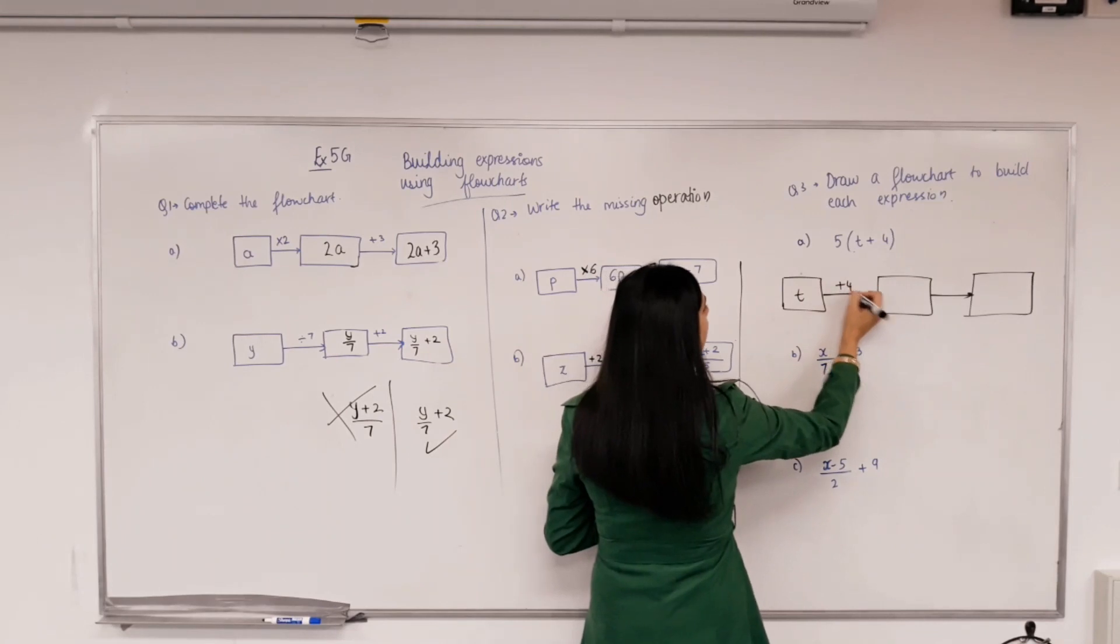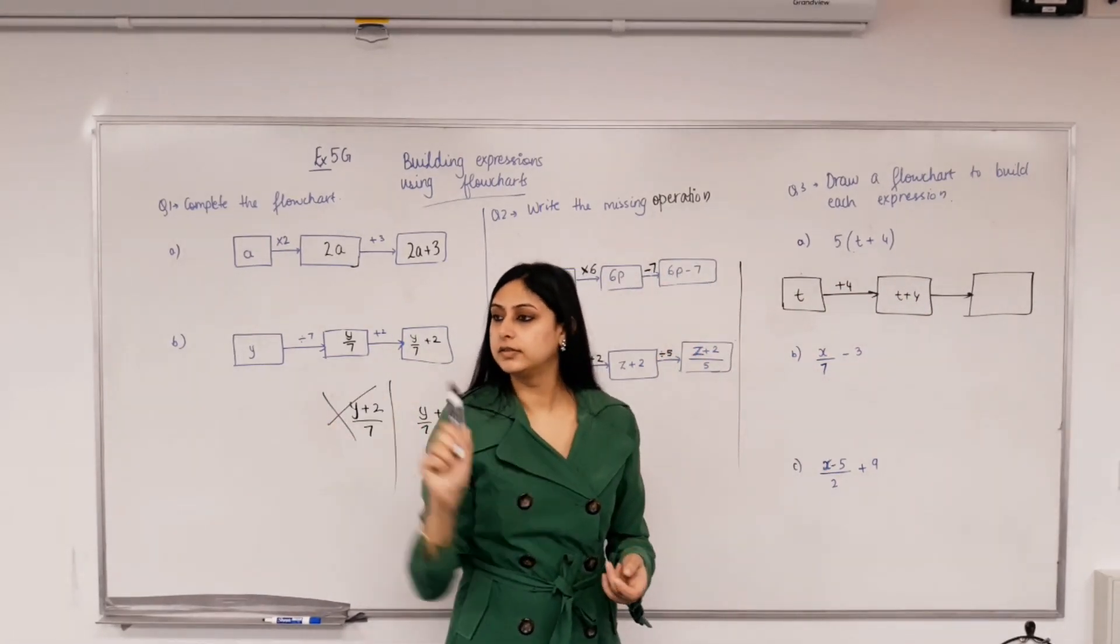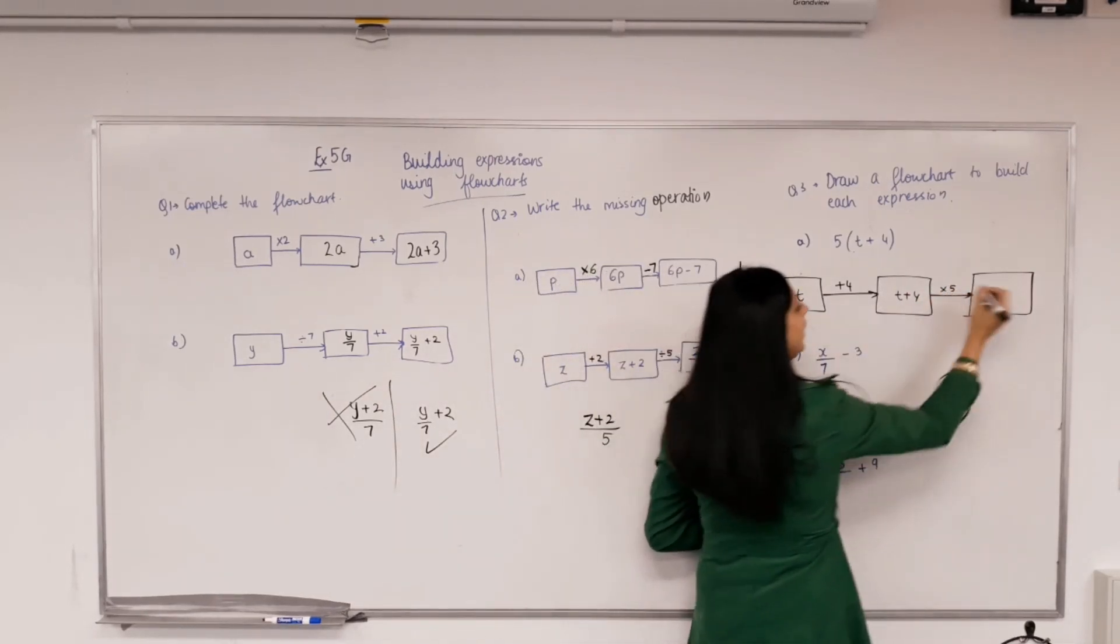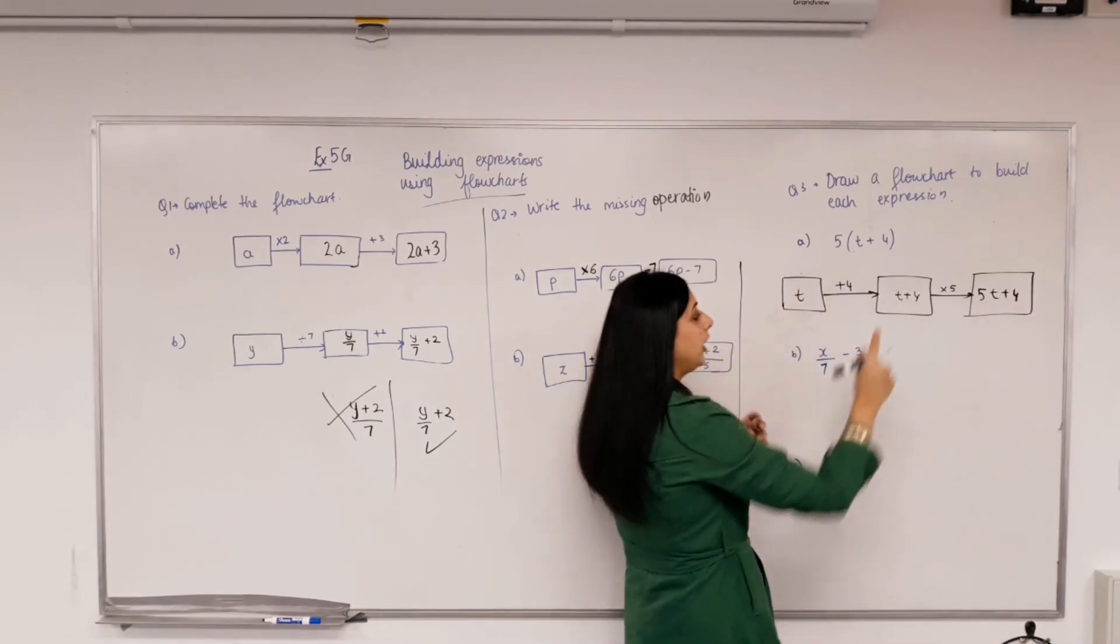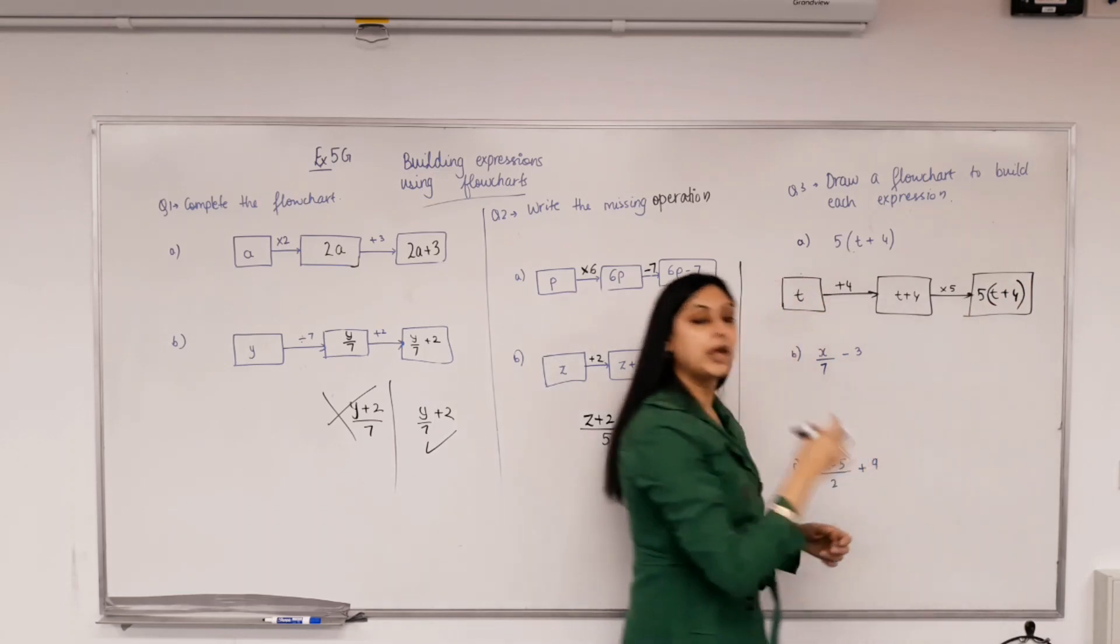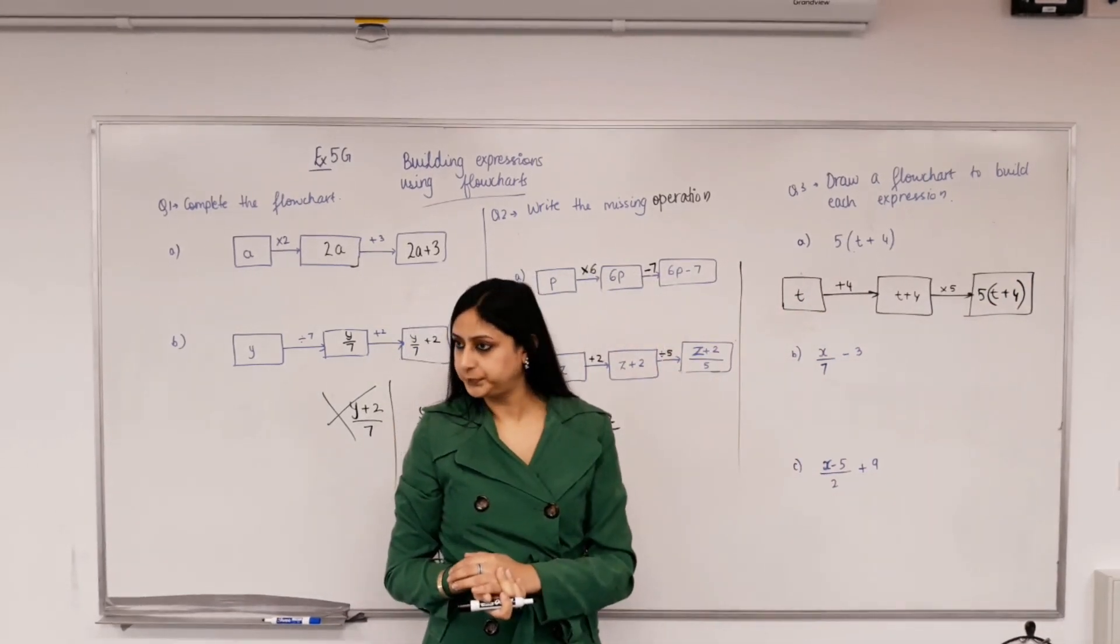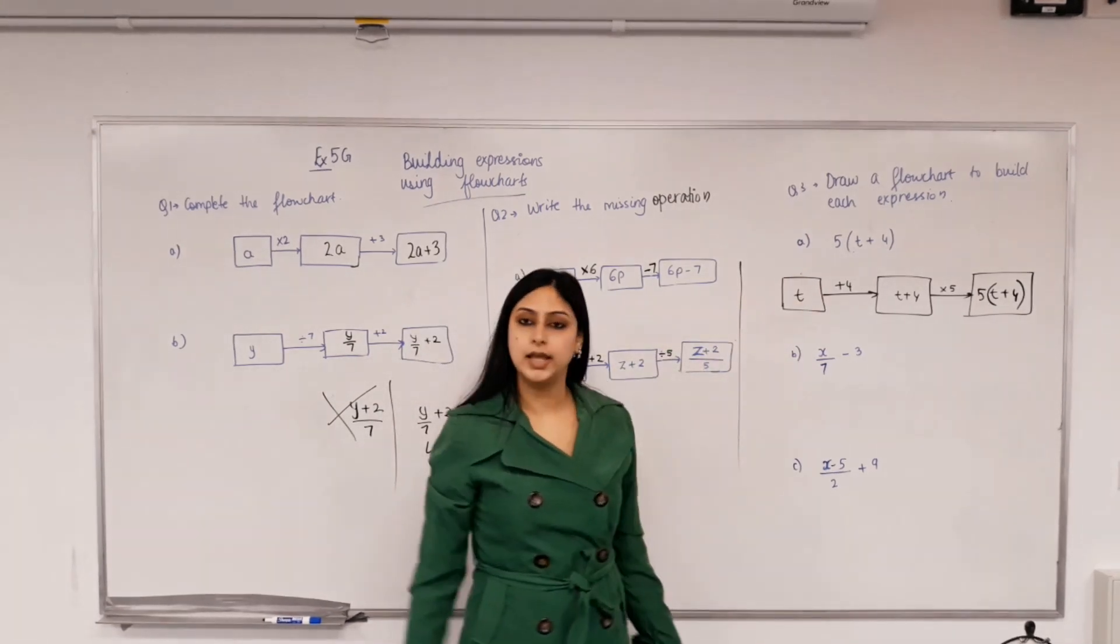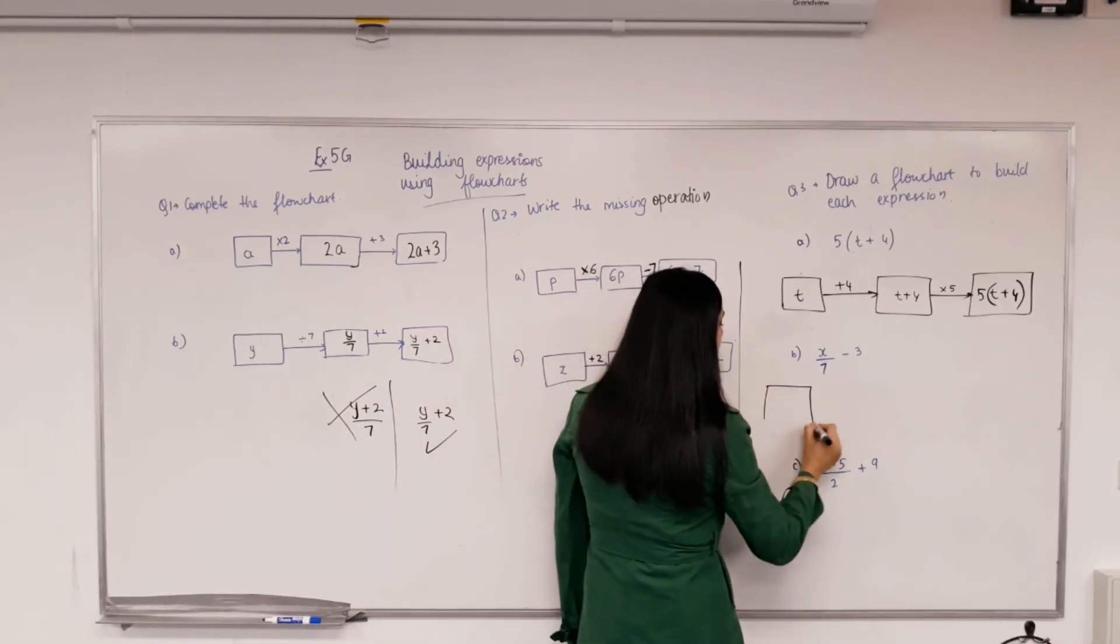Right, because didn't we add 4, plus 4 it became t plus 4, and then times by 5 because we're timesing this whole thing by 5. If I just write 5t plus 4, that's incorrect isn't it? Whatever I have here, I'm multiplying the whole thing by 5, so it is important to use brackets. That make sense? Do we have the same expression? Yes.